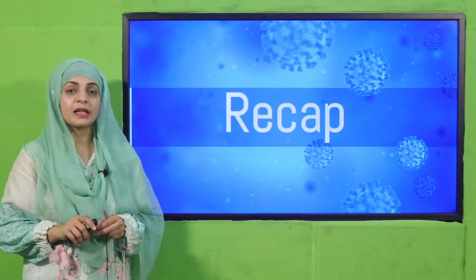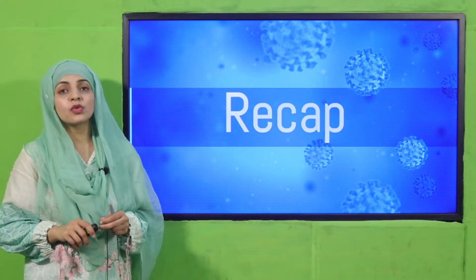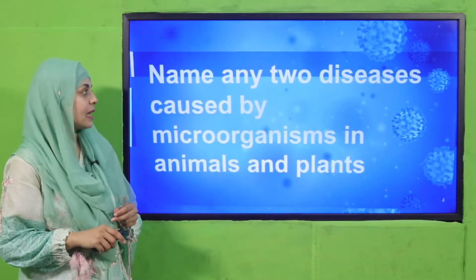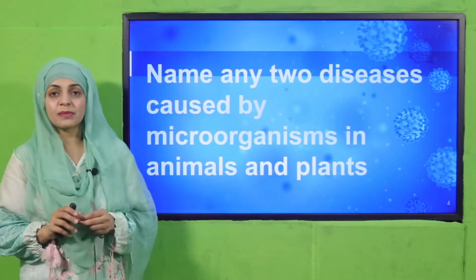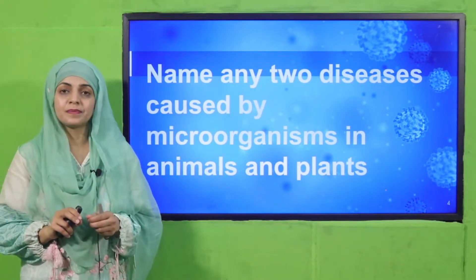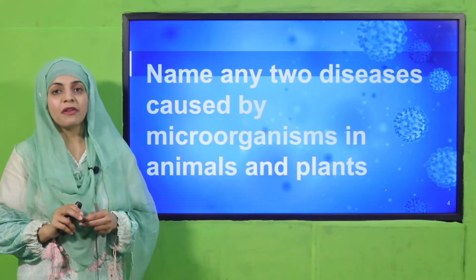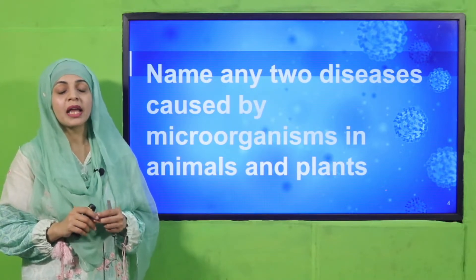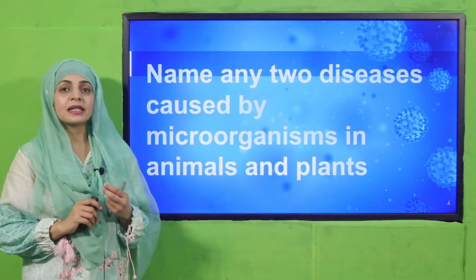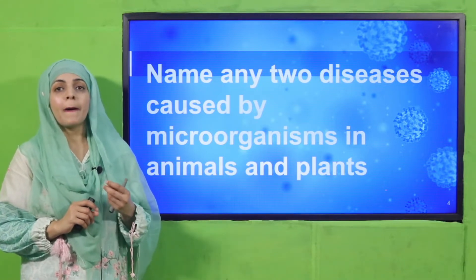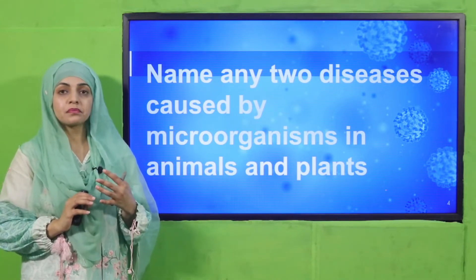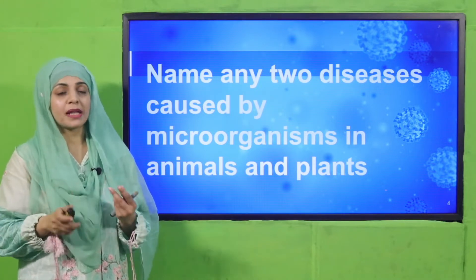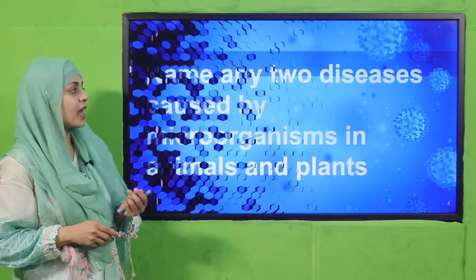Before moving on towards our main lecture, let's quickly recap what we did in the previous lecture. Listen to the questions carefully and then answer them. Name any two diseases caused by microorganisms in animals and plants. In animals, it is rot foot and blue tongue, and in plants it is ring spot and leaf spot.